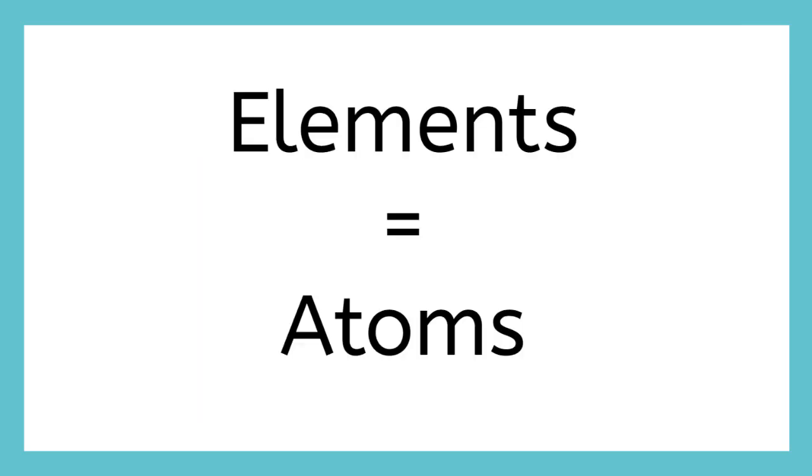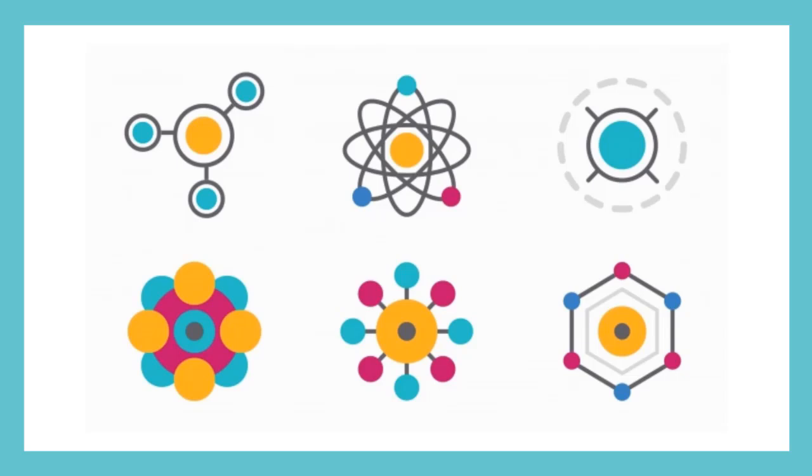Elements are often known by another name you may have learned in one of your lessons, atoms. You might already know that atoms are the building blocks of life. They are super tiny, microscopic blocks of matter that can't be broken down into any smaller parts. Since atoms are so small, scientists have decided to make a table to keep track of them all. We're going to learn how this table is organized.